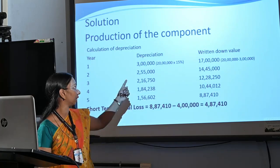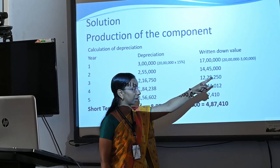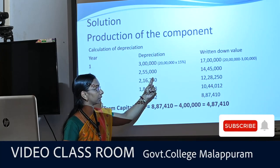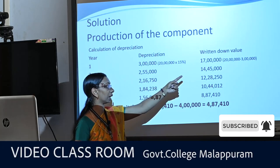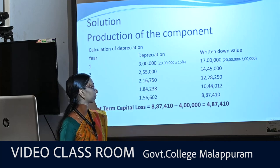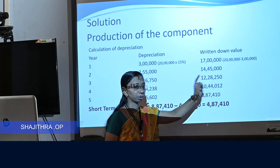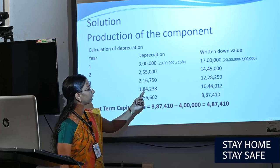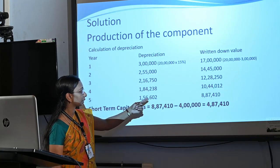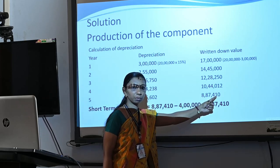Therefore, depreciation in year 1 is Rs. 3,00,000 and written-down value is Rs. 17,00,000. Second year depreciation is Rs. 2,55,000 and written-down value is Rs. 14,45,000. Third year depreciation is Rs. 2,16,750 and written-down value is Rs. 12,28,250. Fourth year depreciation is Rs. 1,84,238 and written-down value is Rs. 10,44,012. Fifth year depreciation is Rs. 1,56,602 and written-down value is Rs. 8,87,410.